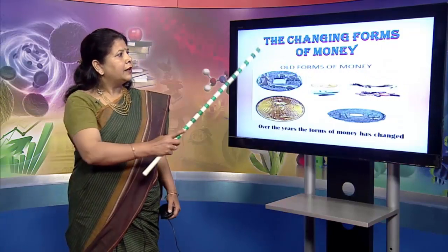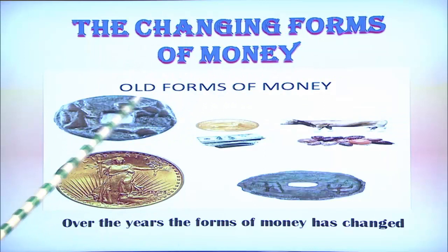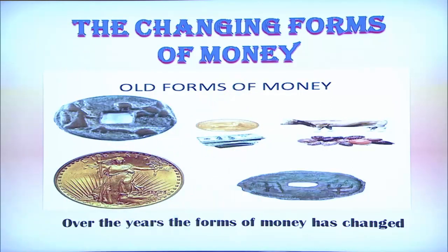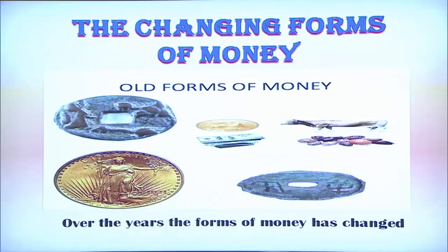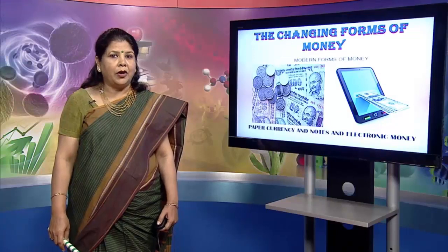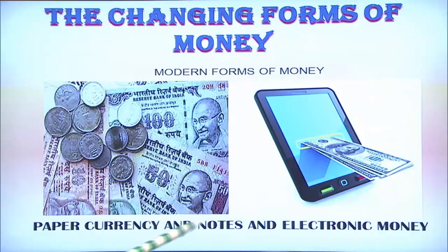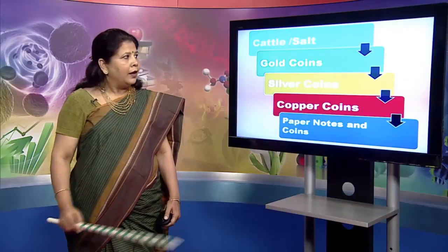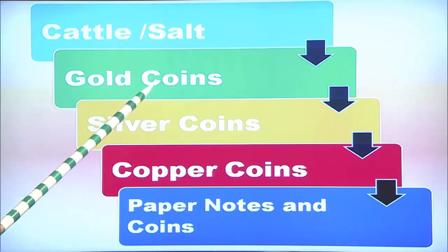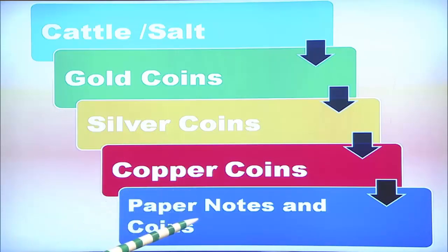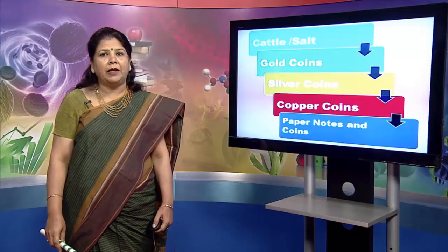Let us now understand the changing forms of money. The old forms of money have been evolving — from cattle to salt to seashells and then to various metallic coins, which had a hole in the middle so they could be strung into a necklace form. The modern forms are paper currency and notes, and now evolved electronic money. The diagram here explains how money evolved from cattle or salt to gold, silver, and copper coins, and now paper notes and coins — and very soon it will be paperless money.